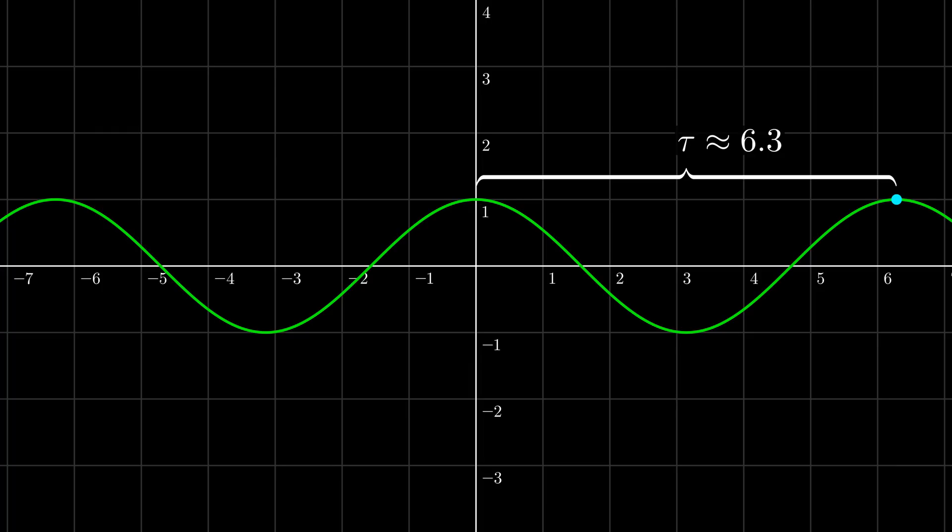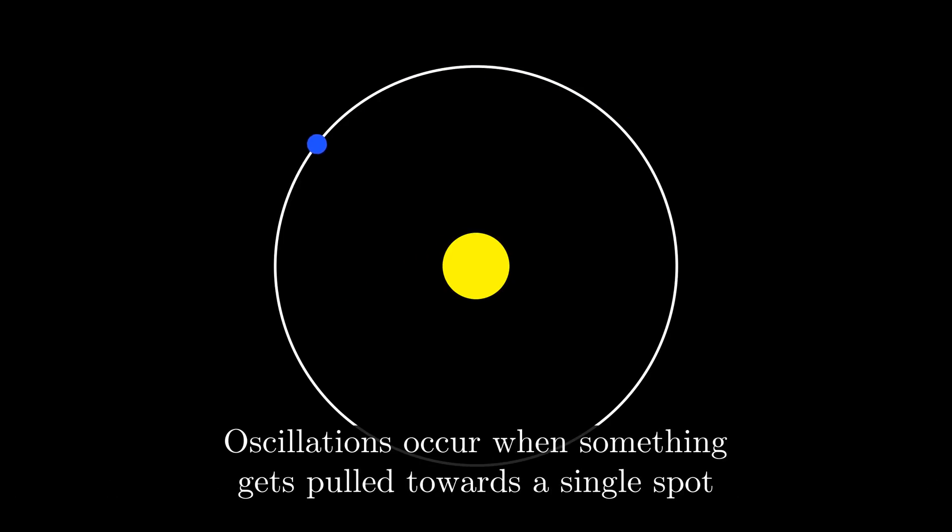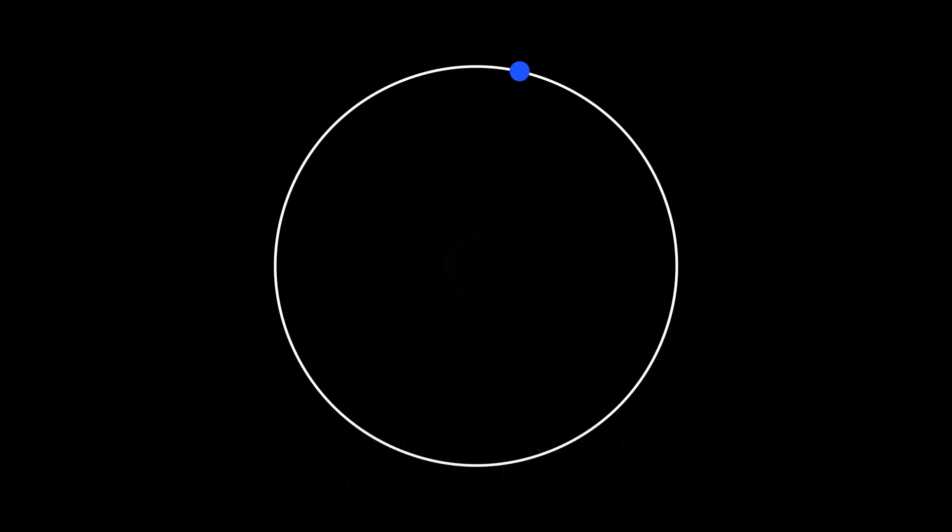At this point, one question you might be asking yourself is how does this relate to angles and triangles? To answer this question, we need to look at an interesting example of oscillations: circles. While you might not have ever thought of circles as oscillations, think about moving along a circle. When moving along a circle, we always come back to where we started and continue repeating, so this is kind of like an oscillation. In fact, if we think of a situation where circles arise naturally, such as the Earth orbiting the Sun, the circle exists because the Earth is always getting pulled towards the Sun. This is precisely the fundamental idea behind oscillations that I mentioned earlier in the video. Even though it looks different because it is two-dimensional rather than one-dimensional, this is definitely an example of an oscillation.